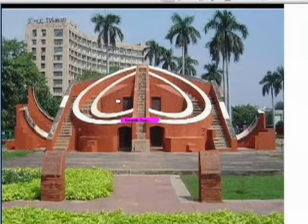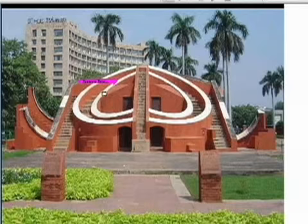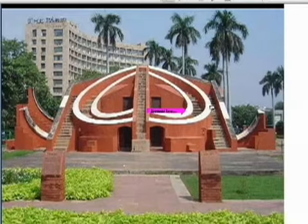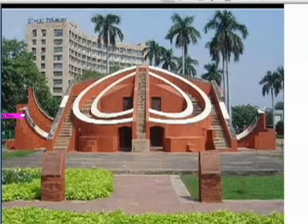Those instruments were kept inside these chambers — you see these doors? They were brought out and placed on the different scales at night and used to make observations. It's not that this was just a piece of stone that people would try to sight along. They had other pieces made of metal, similar to astrolabes or sextants. So it was a very developed technology.